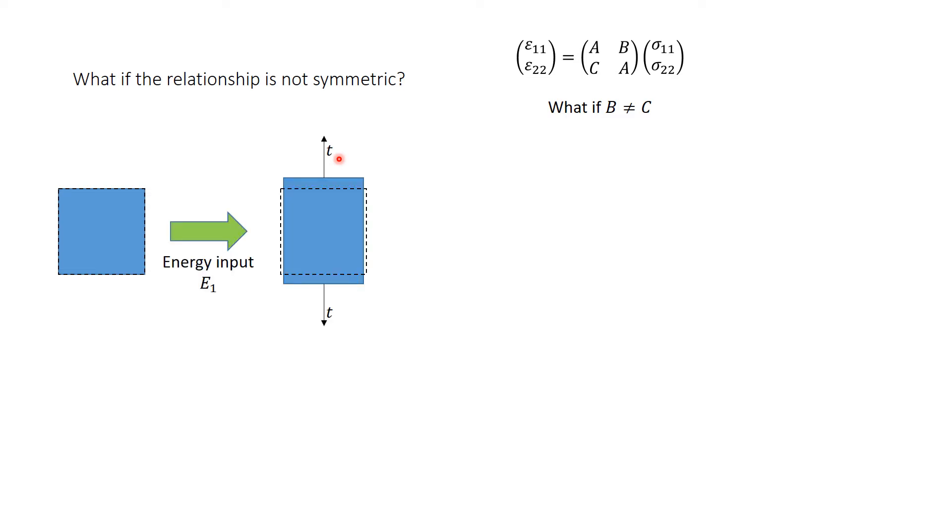First, we will load the material with the stress t in the vertical direction. We will then hold this stress constant and load it with the stress t in the horizontal direction. Finally, we are going to release both stresses simultaneously so that the square returns back to its original shape.